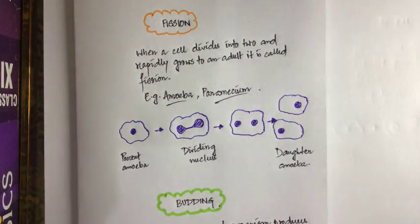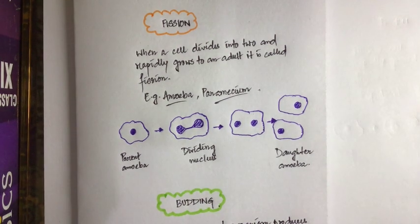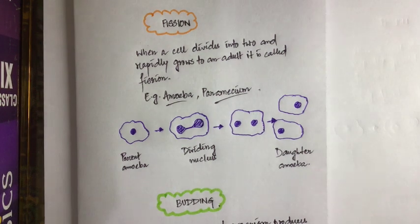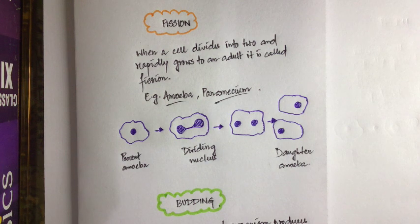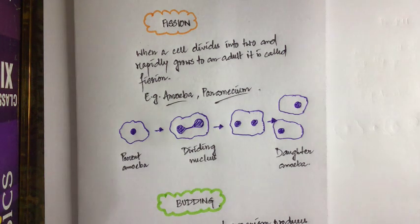You might be thinking that we studied cell division in class 11 — mitosis, where a cell divides into two new similar cells. Is mitosis and fission similar? They are quite similar but have a fine line of difference. Mitosis takes place in multicellular organisms and takes a longer period of time, whereas fission takes place in unicellular organisms and is a very fast process.